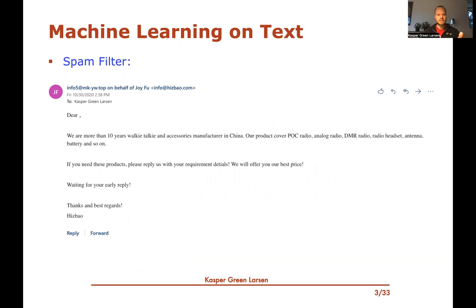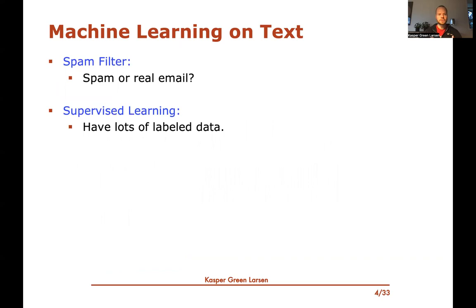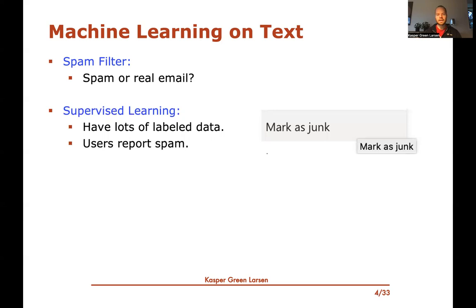Here's another example of a spam email. What distinguishes these? Also, you can see that these are different texts of different lengths. So taking whether something is spam or real email, we would like to use supervised learning. In particular, we typically have lots of labeled data — lots of training data that we can use, at least if you've created one of these email programs like Outlook. These programs allow the user to mark an email as junk.